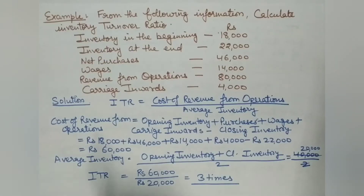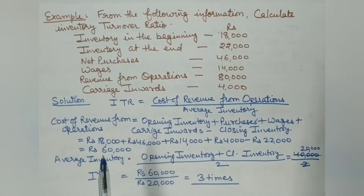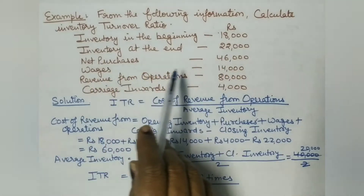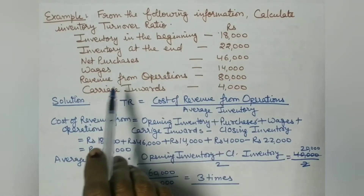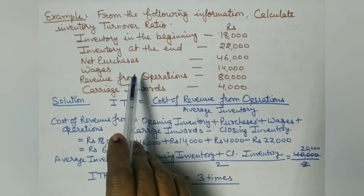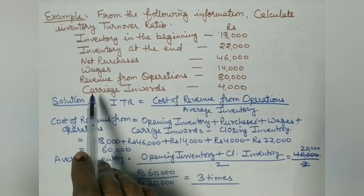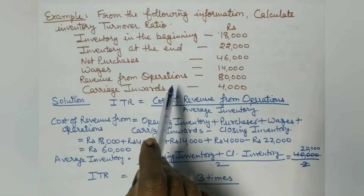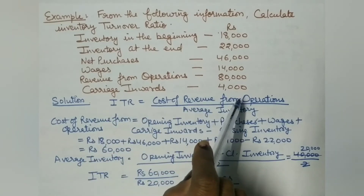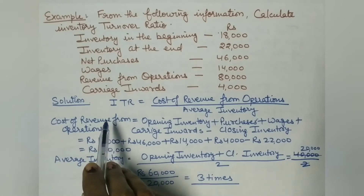Now let's understand this with an example. Calculate inventory turnover ratio from the following information: inventory at the beginning is ₹18,000; inventory at the end is ₹22,000; net purchases are ₹46,000; wages are ₹14,000; revenue from operations (sales) is ₹80,000; and carriage inward is ₹4,000. We will now apply the formula for inventory turnover ratio.